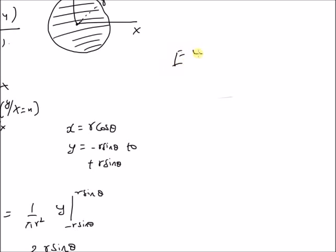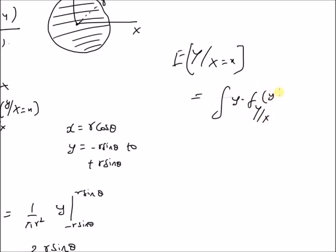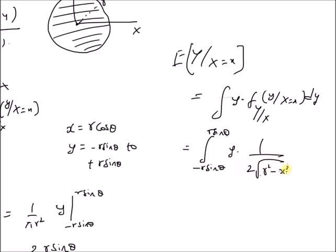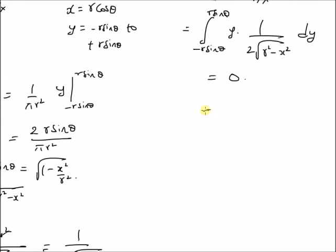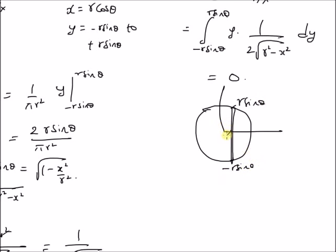Now we find the conditional expectation E[Y | X = x] = ∫ y · f_{Y|X}(y | X = x) dy, with limits from −R sinθ to +R sinθ, times 1/(2√(R² − x²)). This is an odd function integrated over a symmetric interval, so the result is 0. Since the conditional PDF is uniform and symmetric about 0, the conditional mean E[Y | X = x] = 0 for any value of X.